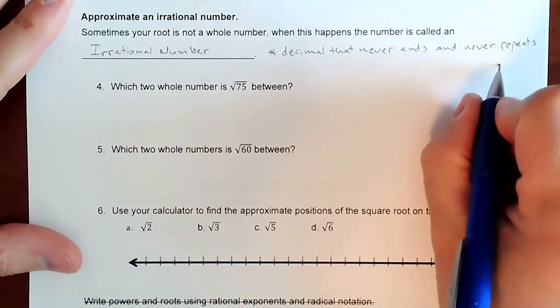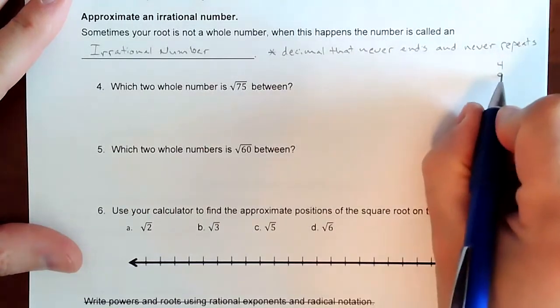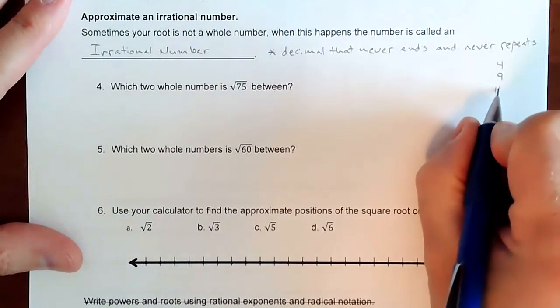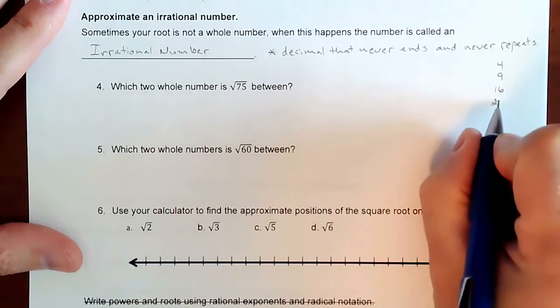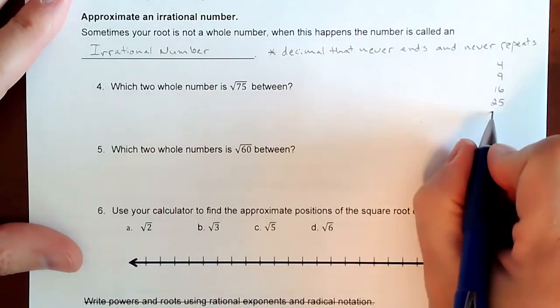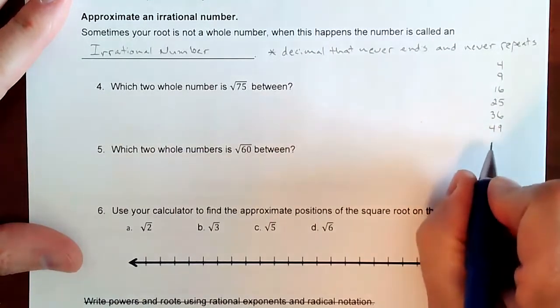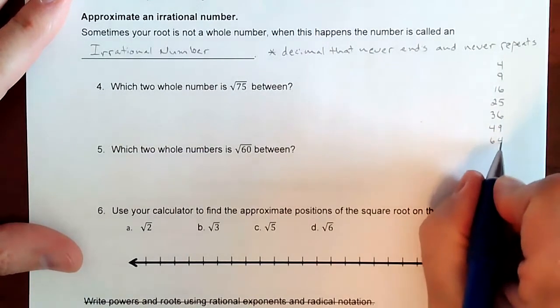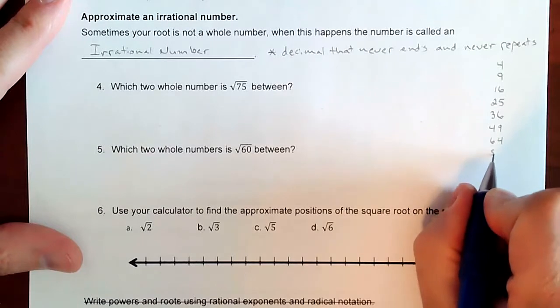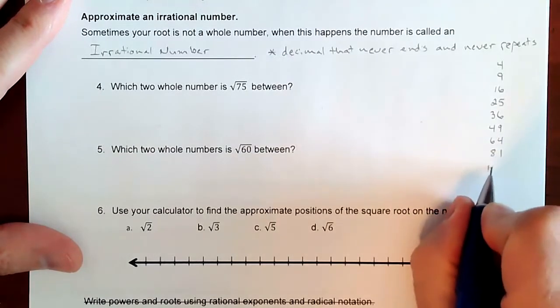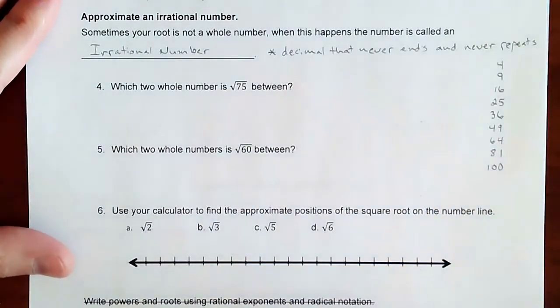So like 2 times 2 is 4, 3 times 3 is 9, 4 times 4 is 16, 5 times 5 is 25, 6 times 6, 36, 7 times 7, 49, 8 times 8, 64, 9 times 9, 81, 10 times 10 is 100. That should cover it.